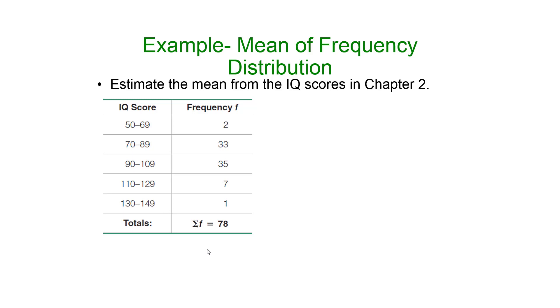That means we have to pick a data value from our class to act as a representative of the rest of the class. For example, in the class from 50 to 69, what might we use as our choice for our data value?